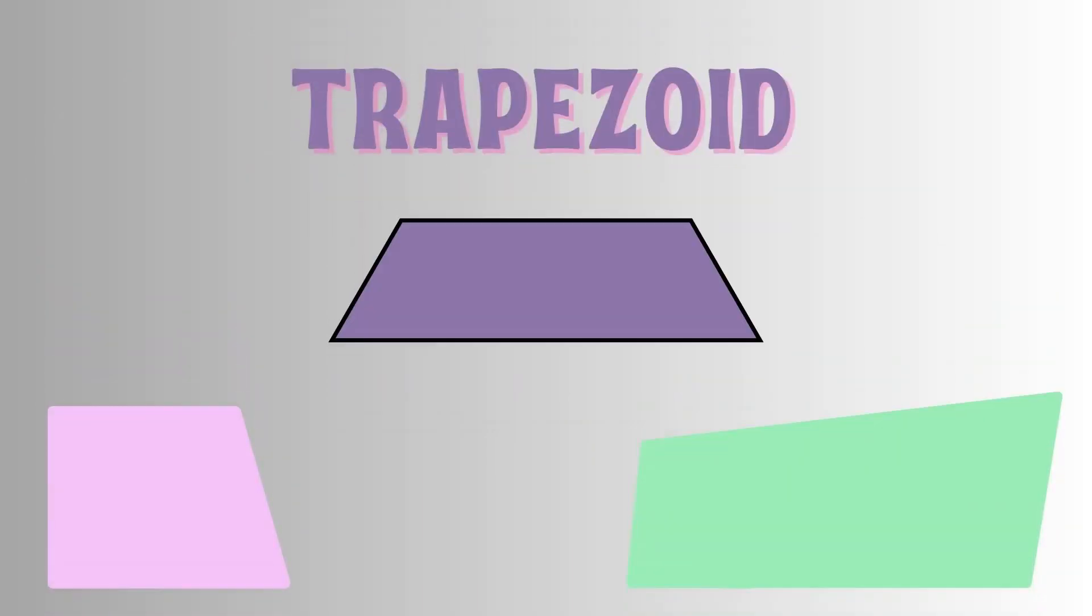Finally, we have the trapezoid. A trapezoid is a shape with two parallel sides and two non-parallel sides. It has four sides and its two lateral sides are of different lengths. This shape can resemble a diamond.